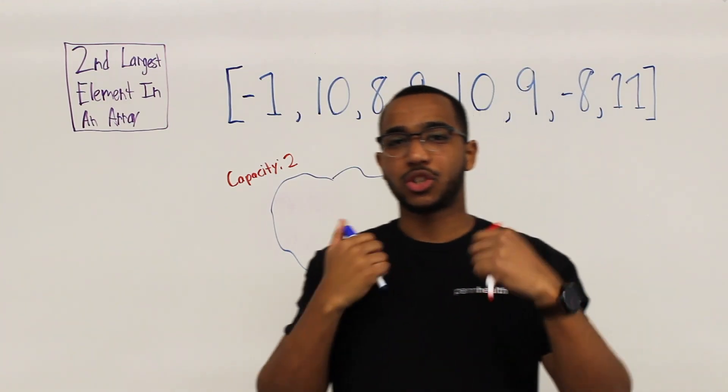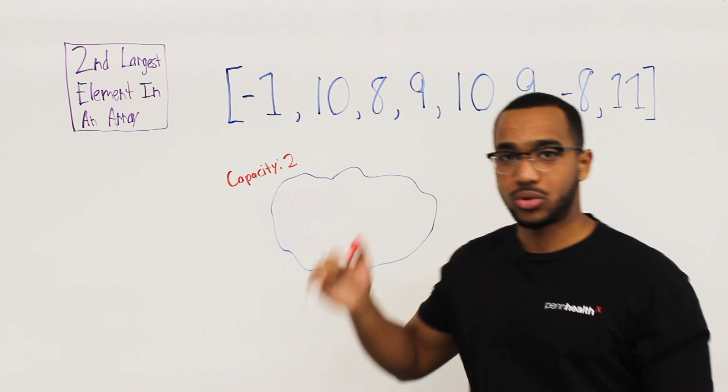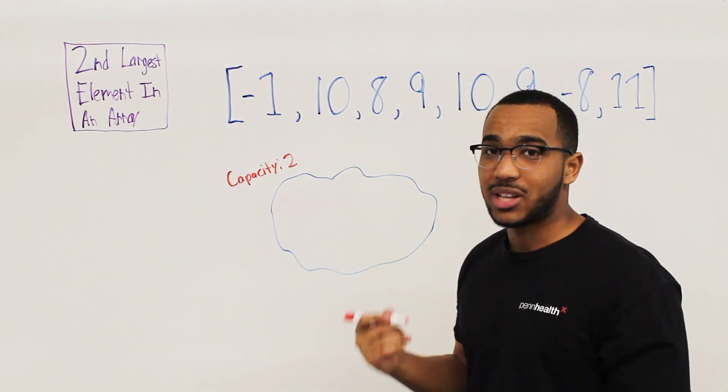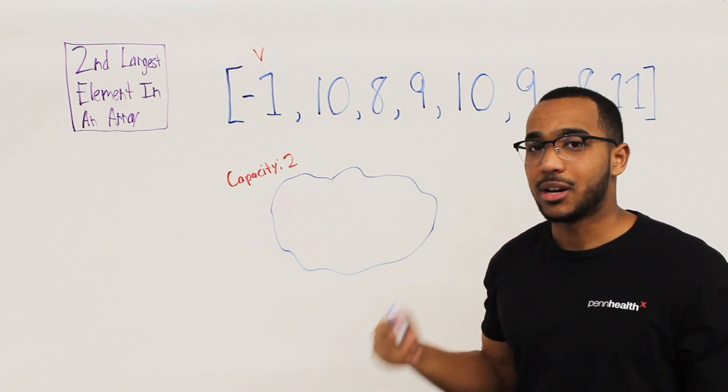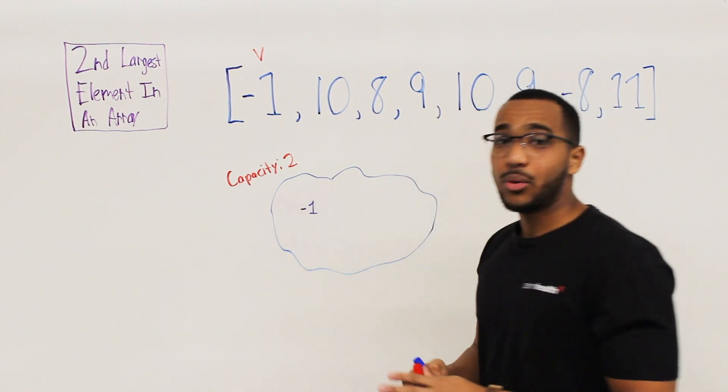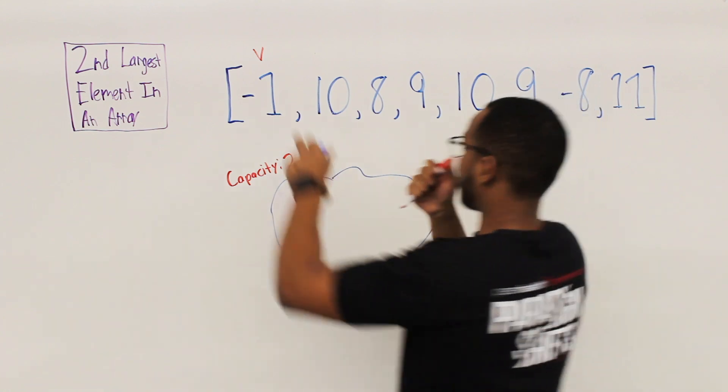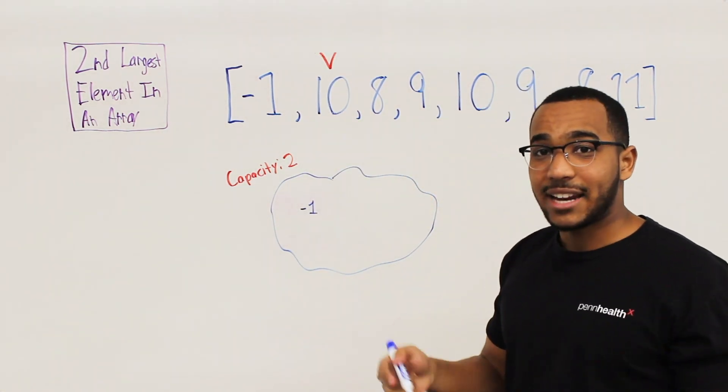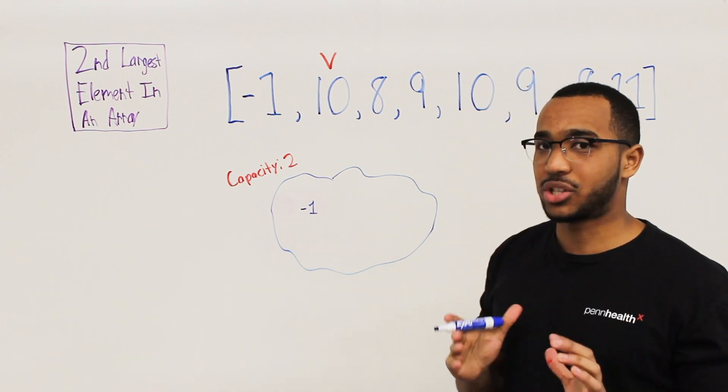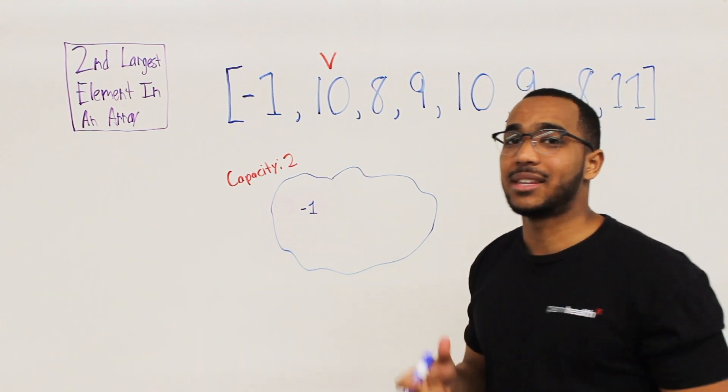Alright, so the way that we start this walkthrough is we're going to start at the first element. We're going to add the first element to the heap. So first we ask ourselves, does the heap contain this element? No, it doesn't. We can add it. And then we move on in our progress. And then we ask ourselves, does 10 exist in the heap? No, it doesn't. Add it to the heap. And you'll see why we need to ask our question whether this item exists in the heap.